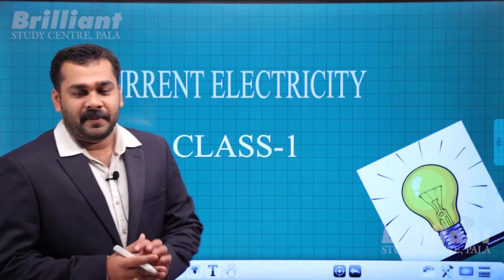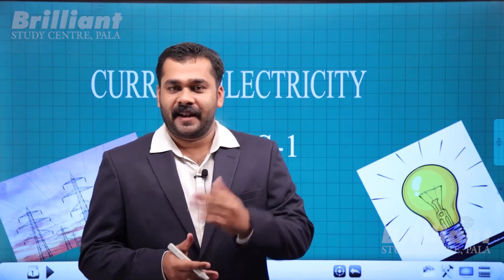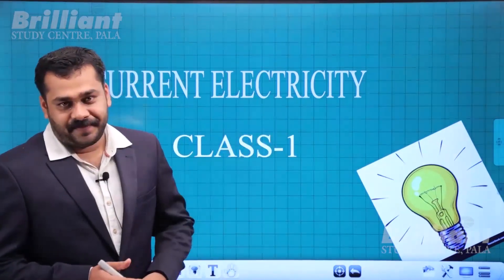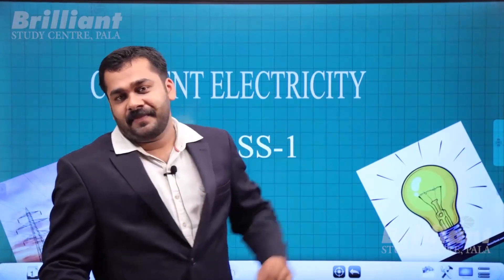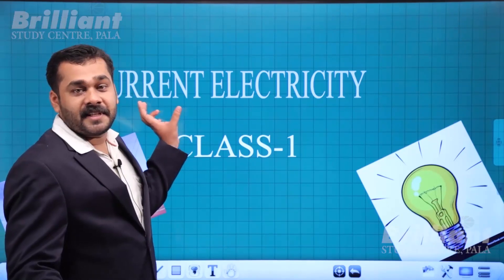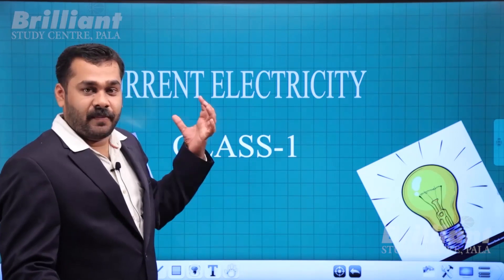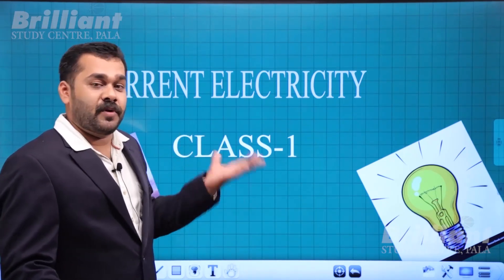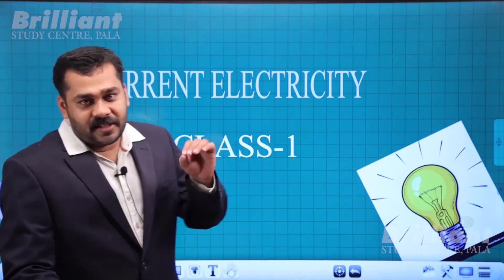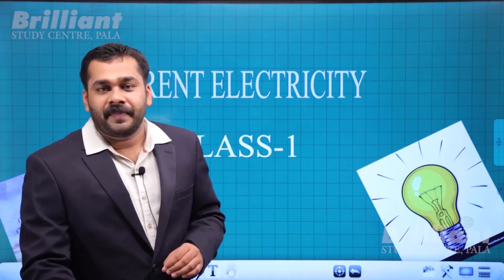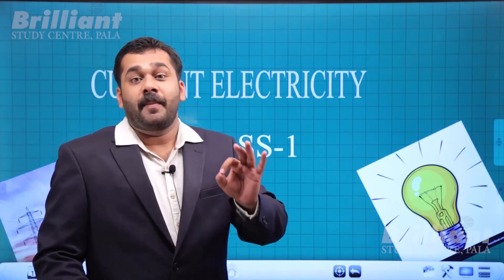Hi students, we are discussing current electricity. Current is nothing but the rate of flow of charge. Electricity is nothing but the form of energy which is produced due to the motion of charges. In this chapter, we are discussing current electricity — it is nothing but the property of charges when the charge is in motion.